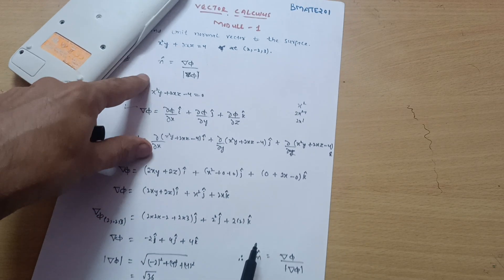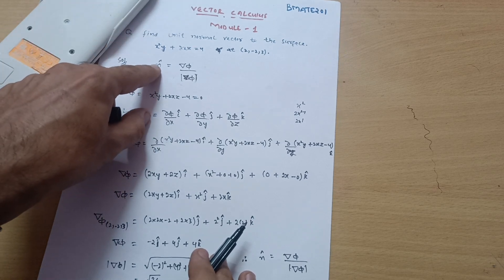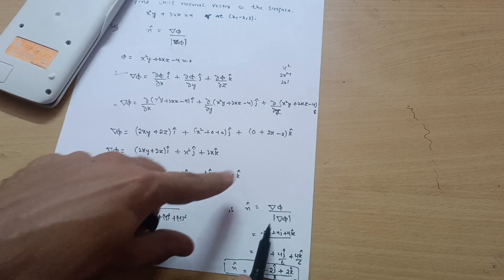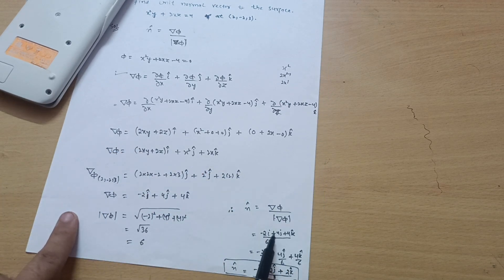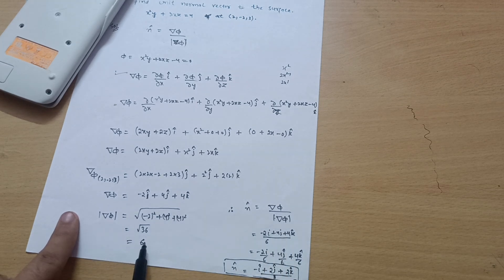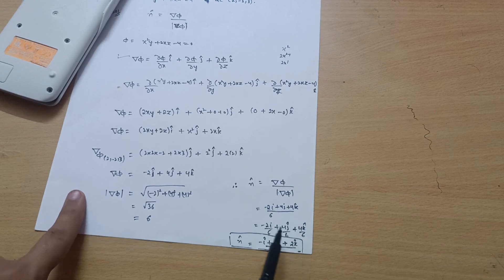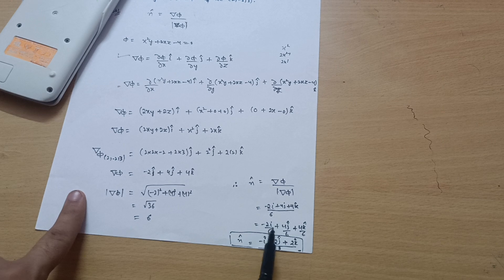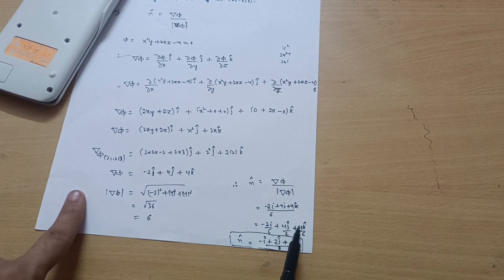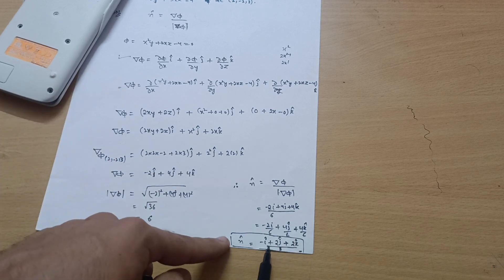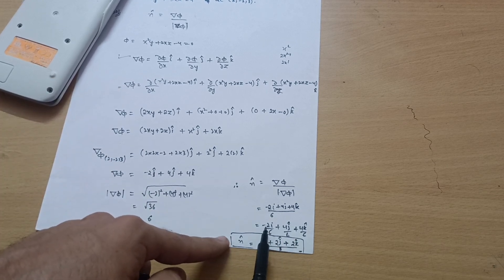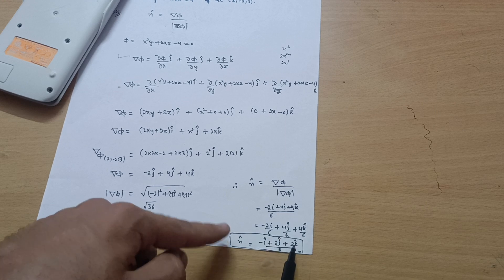Now we calculate the unit normal vector: n̂ = del phi / |del phi| = (-2î + 4ĵ + 4k̂) / 6. Dividing each term by 6: -2/6 î + 4/6 ĵ + 4/6 k̂ = (-1/3)î + (2/3)ĵ + (2/3)k̂. Taking 3 as the common denominator: n̂ = (1/3)(-î + 2ĵ + 2k̂).